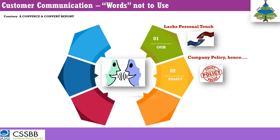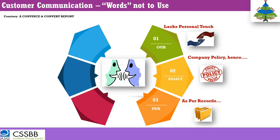The second word to avoid is 'company policy.' Saying 'this is our company policy' or 'as per the policy' signals to the customer that you are not going to hear them. It implies the process was followed correctly and the customer's dissatisfaction doesn't matter. Don't use policy-based language — it will go against the company. Third, 'as per our records' — again using 'our' creates a 'we versus you' dynamic that will never make the customer happy.